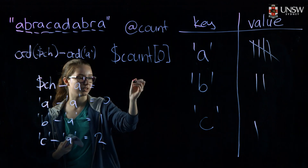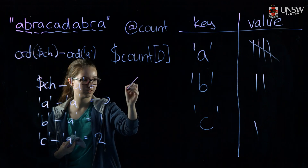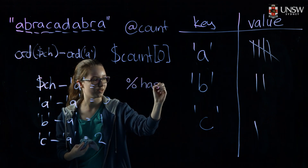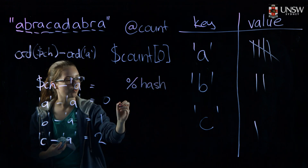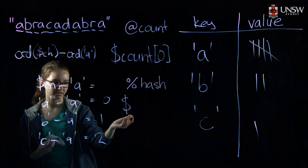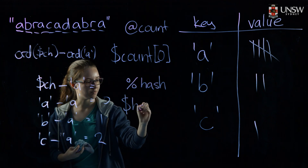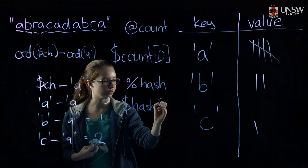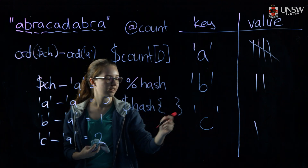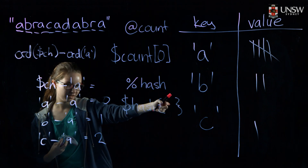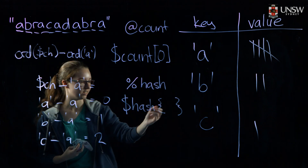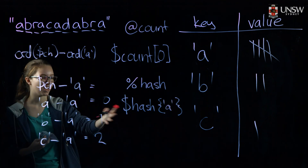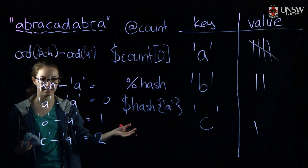We initialize a hash with a percent sign — so we might call it percent our_hash. We get a value using a dollar sign followed by the hash name, and instead of square brackets we use curly brackets. Instead of putting an index inside, we put whatever our key is — for example, the key 'a'. And then we can use it normally just like we'd use an array.